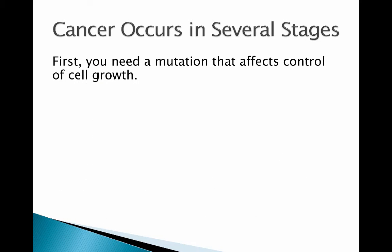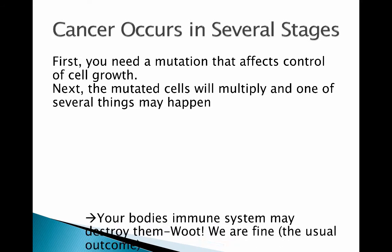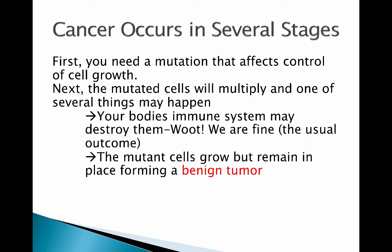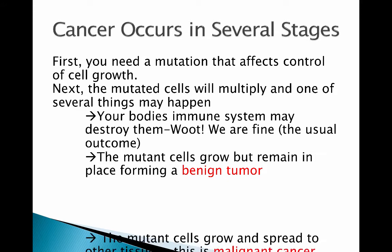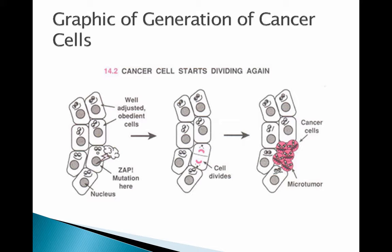Next, the mutated cells multiply and one of several things may happen. Usually our immune system destroys them — that's the most common outcome. If the immune system doesn't kill them, they may form a benign tumor, which stays in place and doesn't spread. The worst possibility is that the mutant cells grow and spread to other tissues — that's malignant cancer.